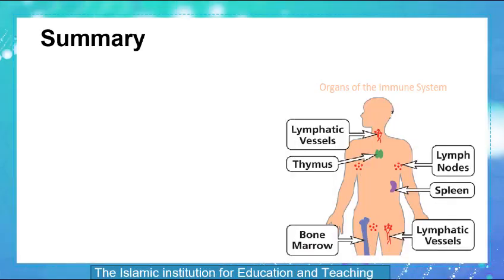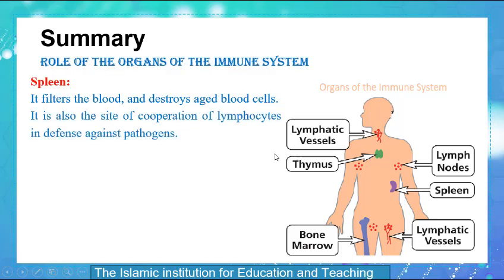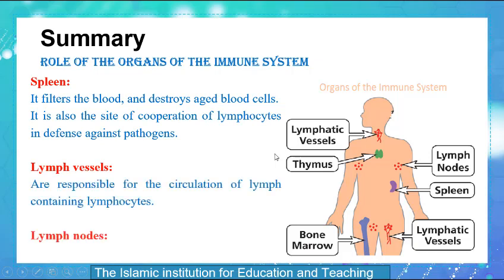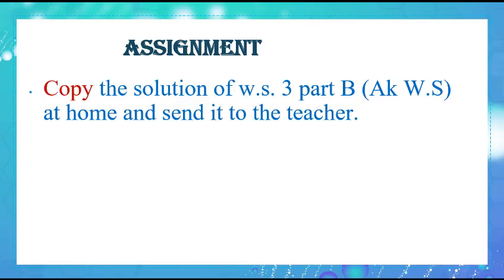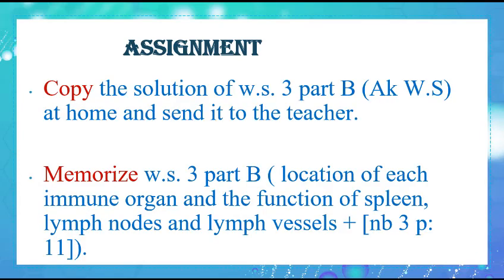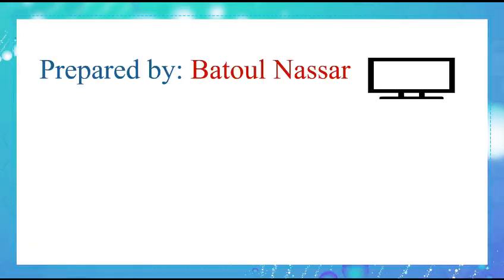Today we talked about the organs of the immune system: the lymphatic vessels, the thymus, lymph nodes, spleen, and the bone marrow. We also talked about the role of some of the organs, such as the spleen, lymph vessels, and lymph nodes. Don't forget your assignment. Hope you enjoyed the lesson — study well and keep safe.